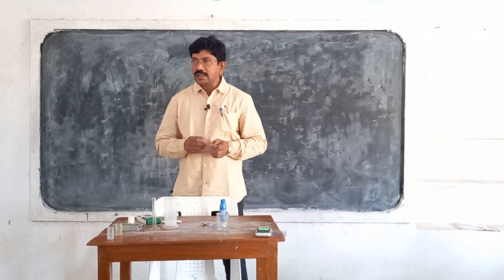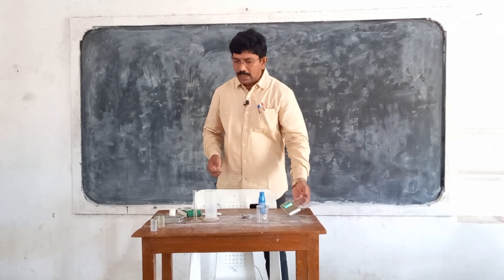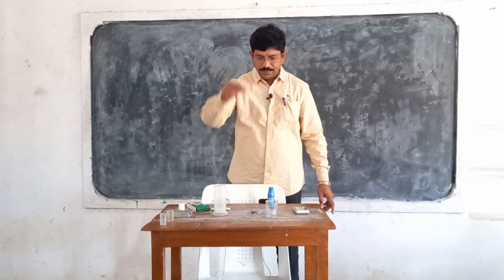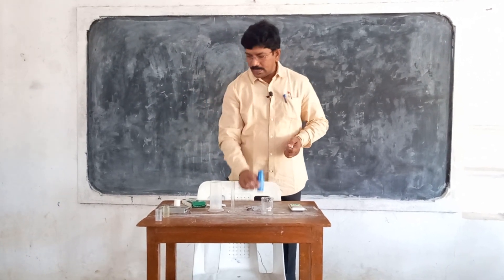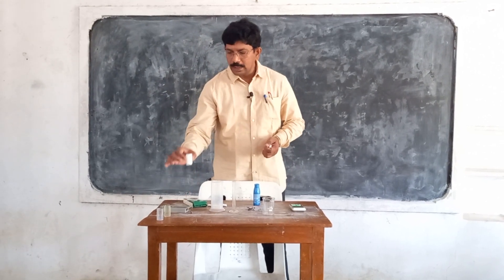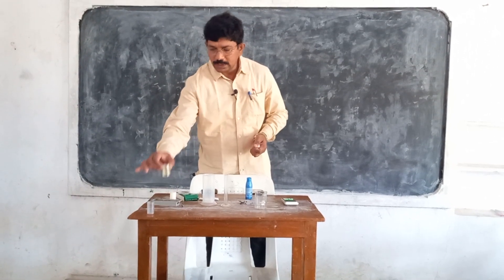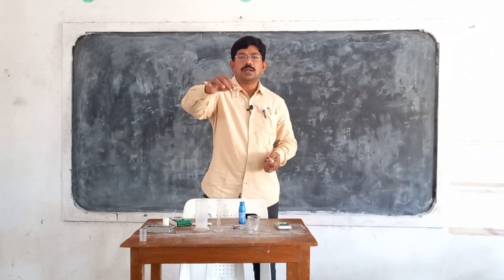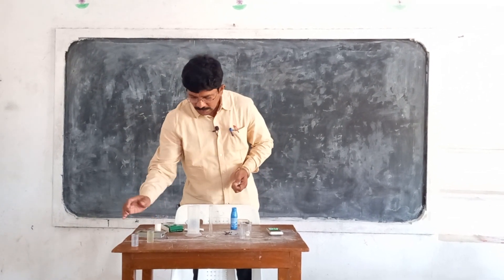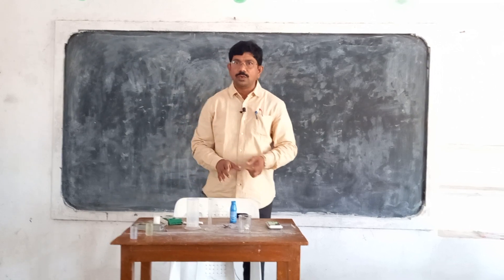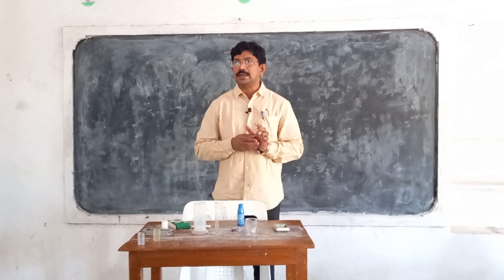For this activity, the materials needed are an electronic weighing machine and a measuring jar. The three liquids we will use are coconut oil, milk, and kerosene. These are the three liquids whose relative density we are going to find in this session.